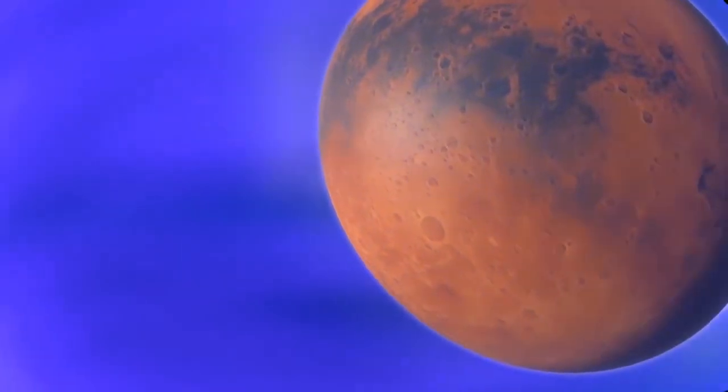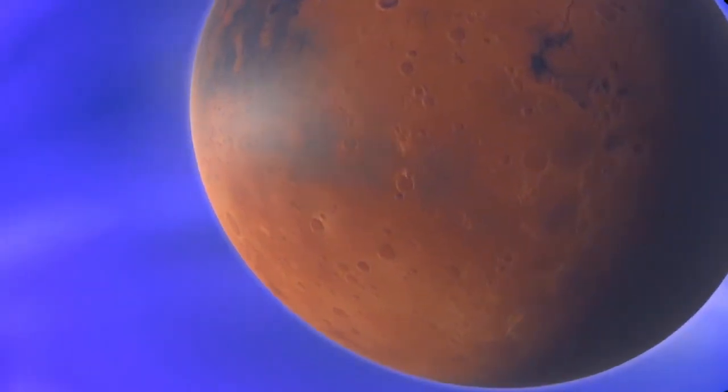Although its rotation is fast enough, Mars lacks a liquid iron core to create a global magnetic field. Without a magnetic shield, the solar wind reaches the planet's thin atmosphere. It has robbed Mars of most of its hydrogen and oxygen.